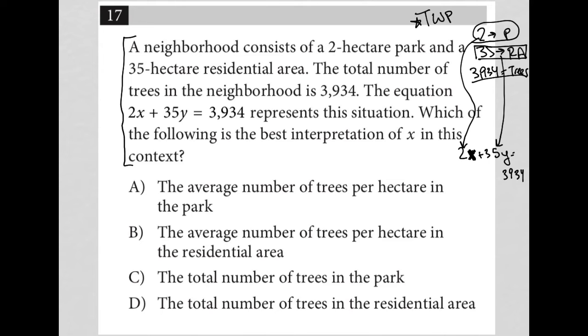And then we have a total number of trees. So this equation must be helping us figure out the total number of trees we have. The number of trees in the park plus the number of trees in the residential area gives us the total number of trees. And this is what I mean by making sure you understand what you read before moving on.